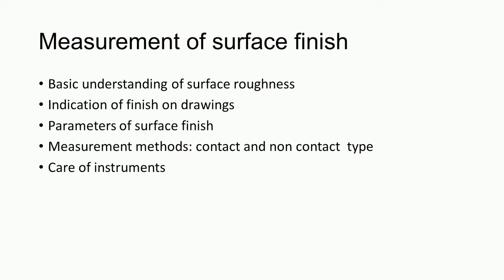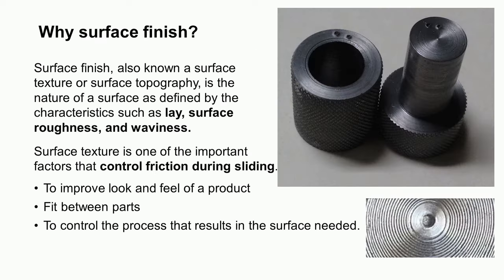We will also learn some offline methods and in-process gauging of surface finish, and then move to care of instruments. Let us understand what is the meaning of surface finish. If you take any engineering component, it will have a surface which is open to the atmosphere, and there are some valleys and peaks on the outer boundary of the work piece. Sometimes the surface will be very rough and sometimes very smooth. In cases where there are sliding parts, for example machine tool guide ways or bearing surfaces, we need to have a very fine and smooth surface.